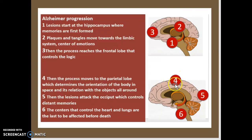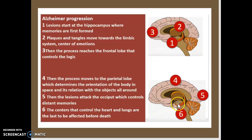The parietal lobe tells the body whether it is sitting down, standing up, jumping, about to land, etc. Eventually, once it passes through the parietal lobe, the lesions will attack the occipital region, which controls distant memories — for example, any childhood memories or memories held for a very long time. The centers that control the heart and the lungs are the last to be affected, and since these are vital organs, when these are affected it will result in death.